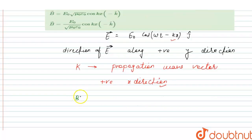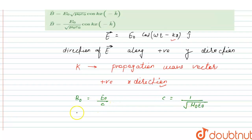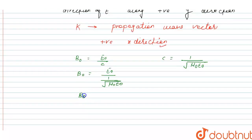We have to find the value of the magnetic field. Since we know that B0 = E0 / c, where c = 1 / √(μ0ε0). So putting in the value, B0 = E0 · √(μ0ε0).